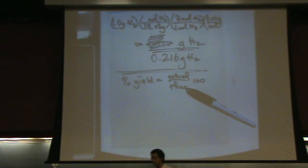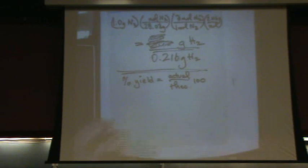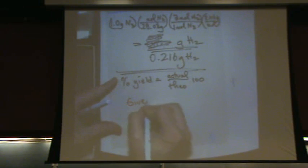Actual has anything to do with lab. So if you're in lab or if it says in the question the experimenter got this or someone was doing this and got so much, that's the actual. Okay, so it has to be a given number.